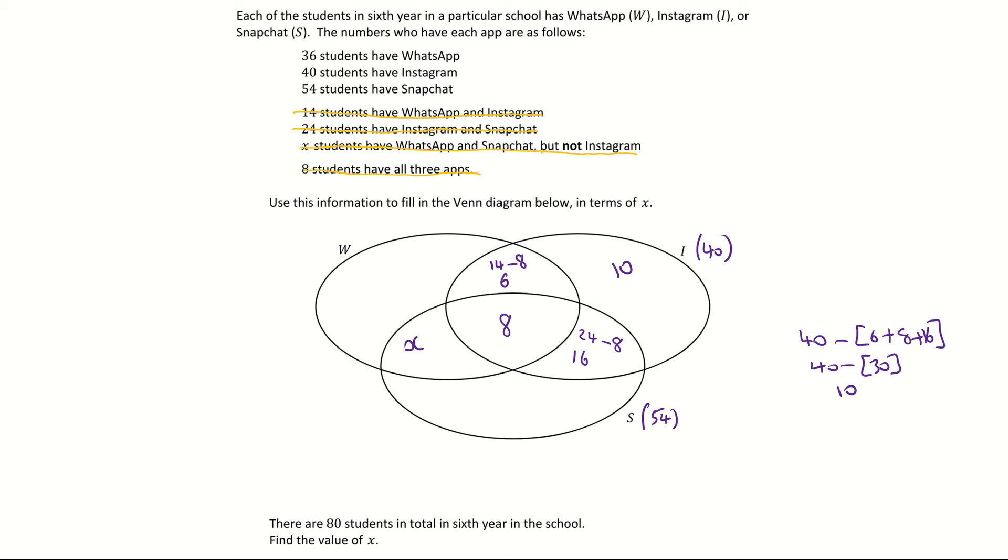If I come back down now to the 54 students who have Snapchat and I do the exact same thing here, I draw the circle around the full set. You'll notice here that there's an x in it, so it's a little bit harder. I have to subtract the x this time as well. So to get this little region in here I need to go 54 subtract the x subtract the 8 subtract the 16. Be careful there, remember what I'm saying. I'm saying subtract each time.